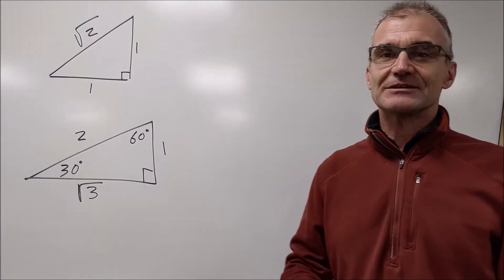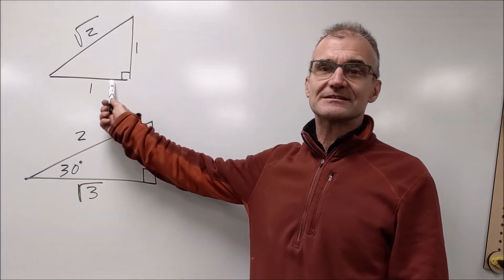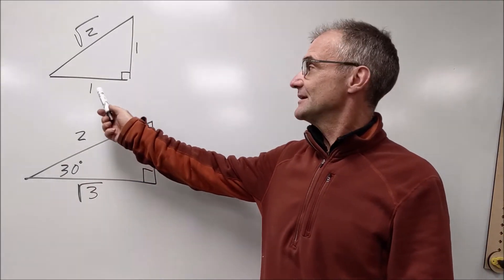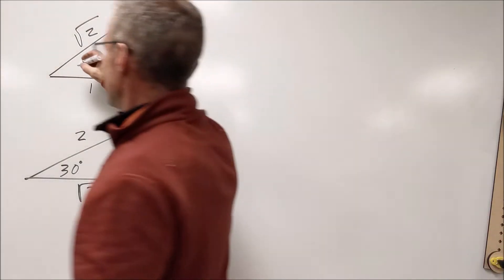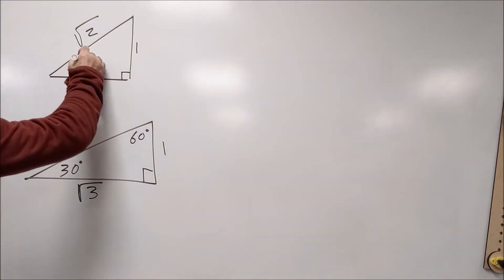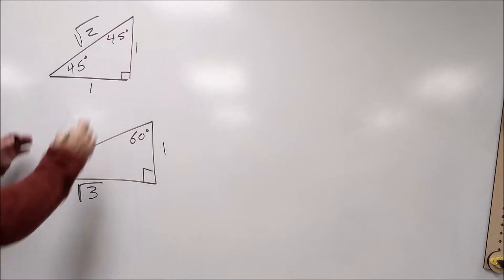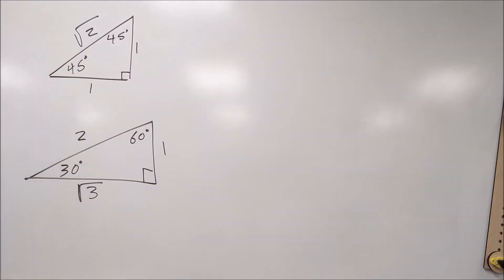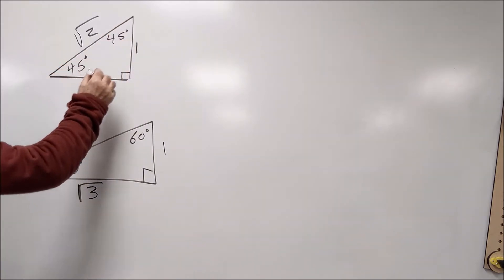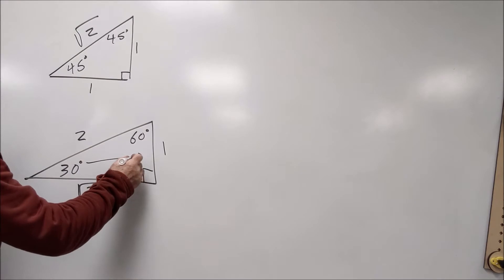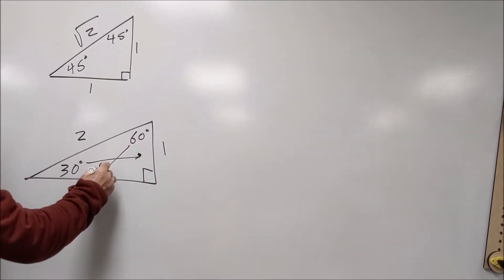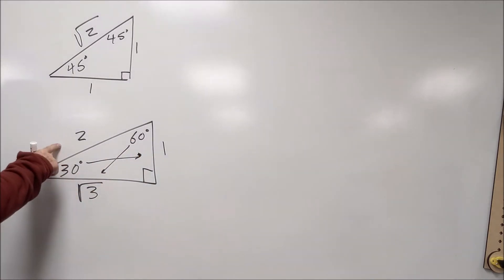A couple things you have to know for exact value problems: you have to have an isosceles right triangle down. Isosceles means two sides are congruent, so the angles opposite them are congruent. You have a ratio 1 to 1 to root 2. And a 30-60-90 triangle where the side opposite 30 is 1, side opposite 60 is root 3, and the hypotenuse is 2. So you have to have those triangles down.